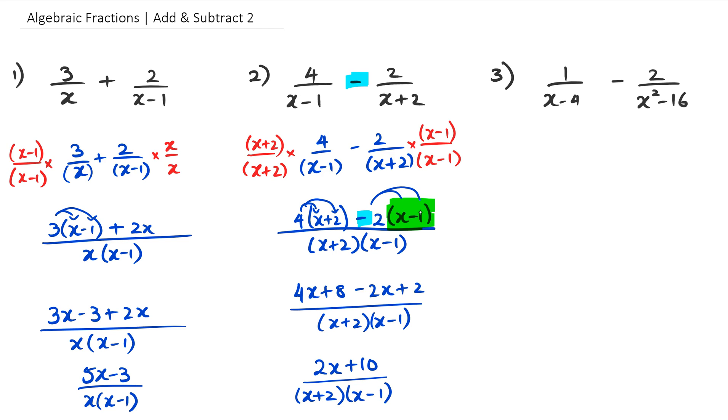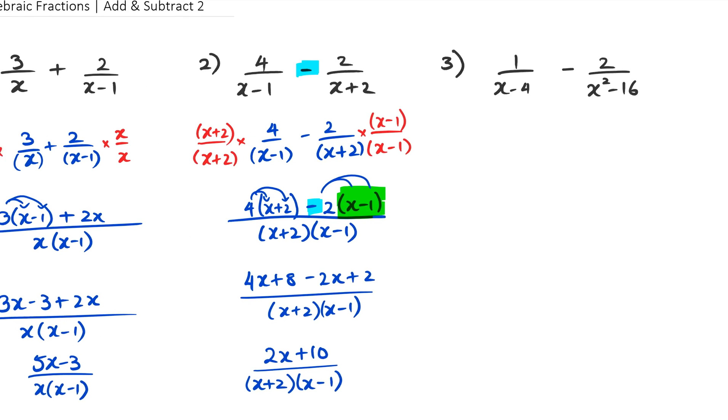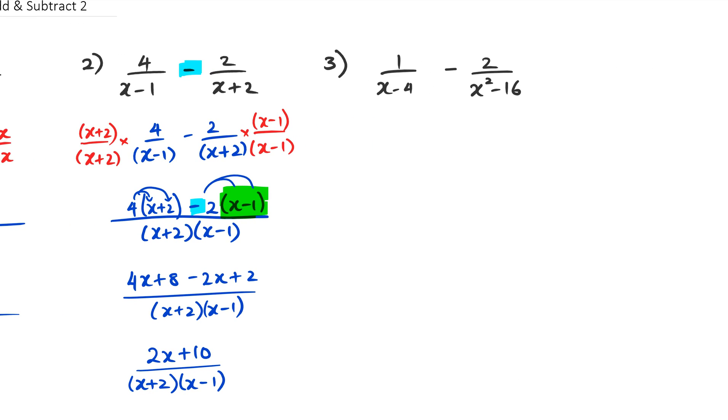So now we go to question number 3. With 3 there is something to notice here. And I guess if you guys look at it, is that x squared minus 16 can be written as x minus 4 and x plus 4. So this whole question I'm going to rewrite this now as 1 over x minus 4 minus 2 over x minus 4 and x plus 4.